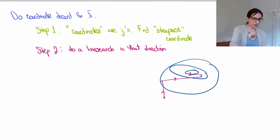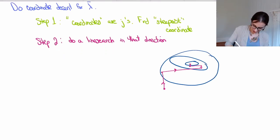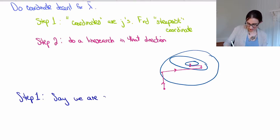Okay, so let's actually go through the calculation for these two steps here. Alright, so step one is that the coordinates are j's and we're going to find the steepest coordinate. So let's say that we're already in the middle of AdaBoost. We've run it for a few iterations and say we are at lambda t.